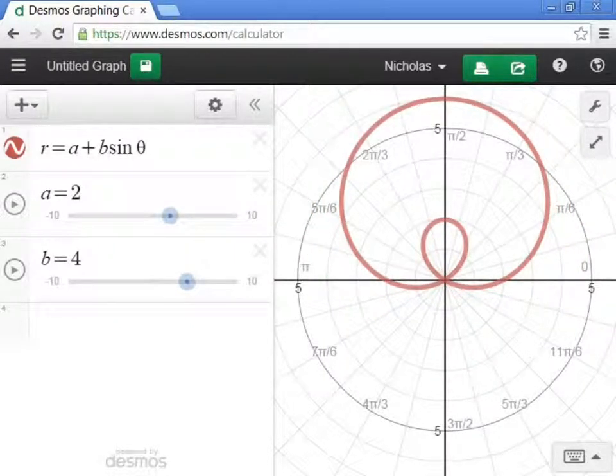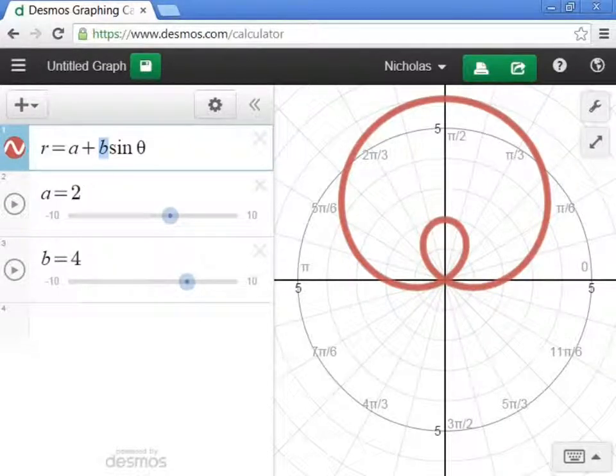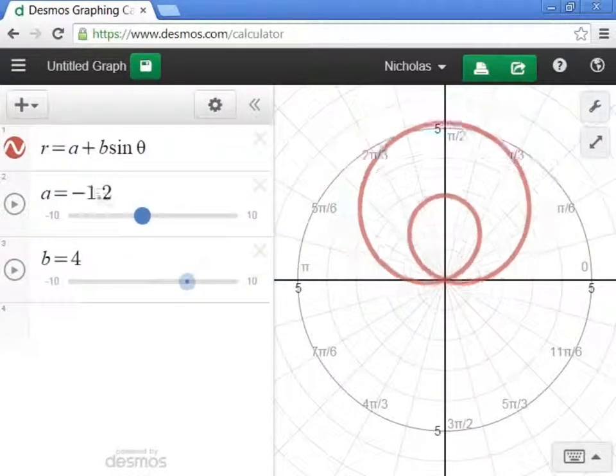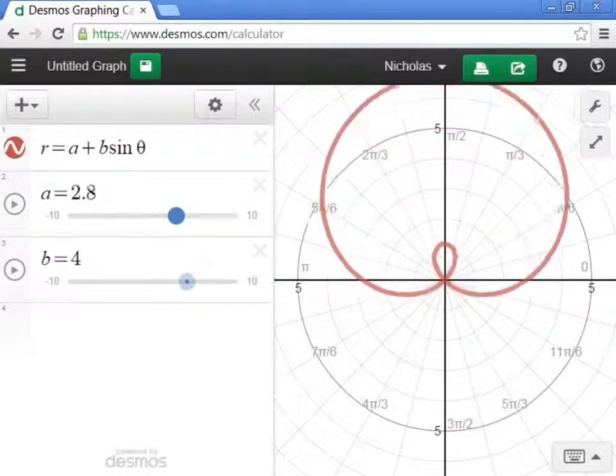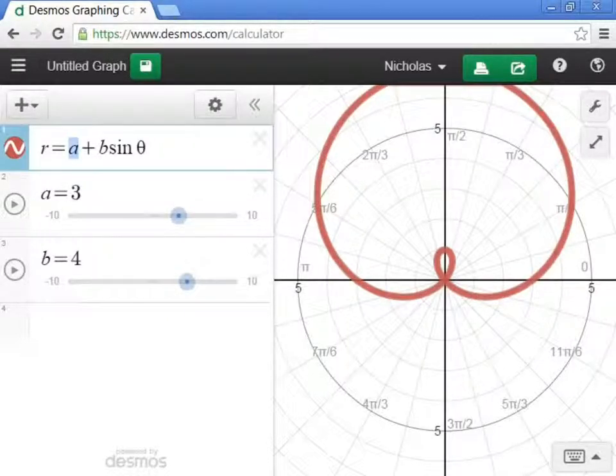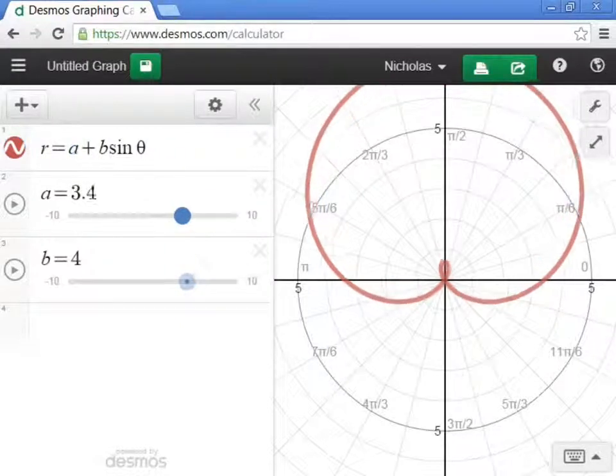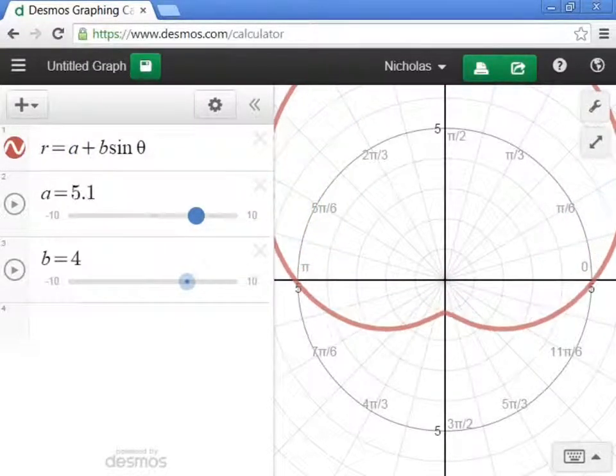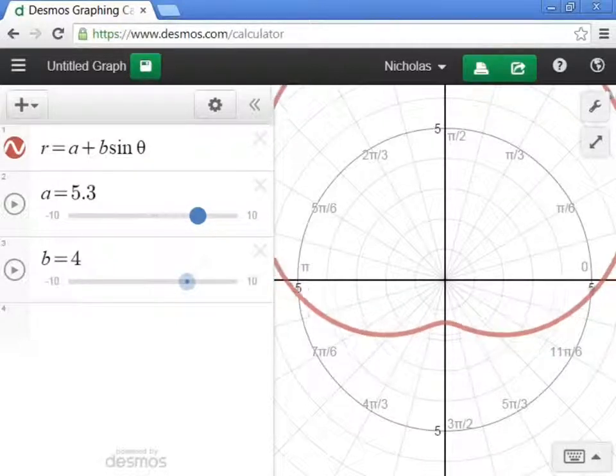So if we go 2 divided by 4, then we have 1 half. 1 half is less than 1. That's why we have a loop. So if this value right here is bigger than this value right here, then we're going to have a loop. Well, what happens if the A is bigger than the 4? See that right there? The A is 3. What if this A is bigger than the 4? Well, let's see what happens. If we go bigger than the 4, that's when we start losing the point of the heart and we start getting a dimple.